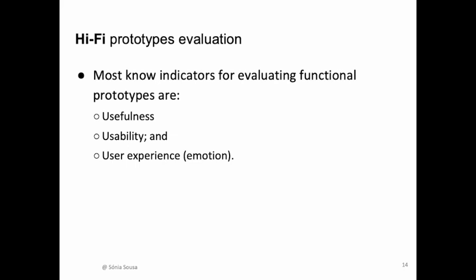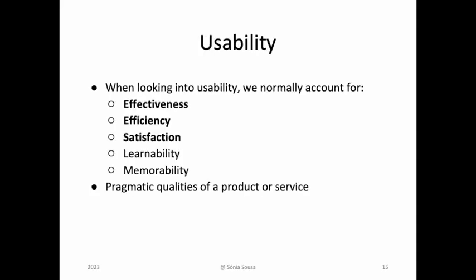For high fidelity prototype evaluation the most key indicators are related with usefulness — so we focus on understanding if the user finds the prototype useful. Then we focus on usability. Usability has three main key attributes: efficiency, effectiveness, and satisfaction. Efficiency and effectiveness are related to how the user does something, and satisfaction is more how the user thinks — what is the experience, the perception of using.